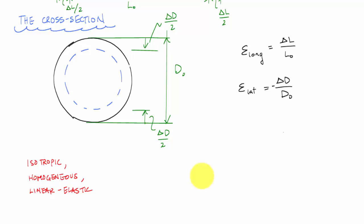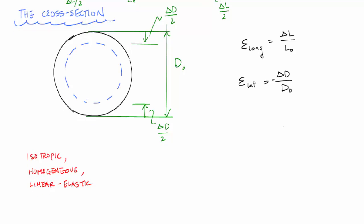If you applied compression in the longitudinal direction, then you had elongation in the lateral direction. And what Poisson observed was that the ratio of the lateral to the longitudinal normal strain was equal to some constant. And this constant is what we call Poisson's ratio.